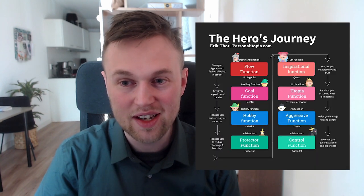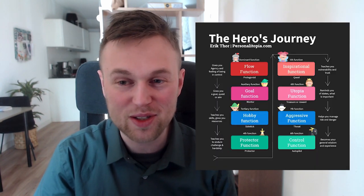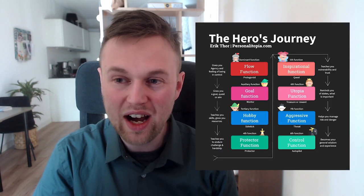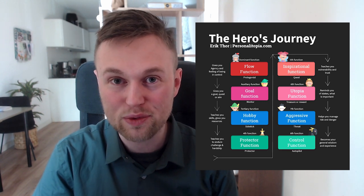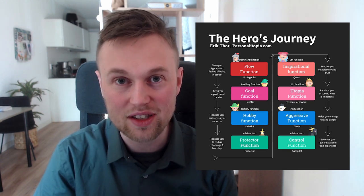Hey everyone, my name is Eric Thor, and today we are talking about the 8-function model. The 8-function model was developed to understand Carl Jung's 8 cognitive functions, and it was an attempt by John Beebe to study how each cognitive function works for each of the 16 personality types.